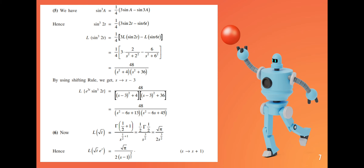Find the Laplace transform of sin³(2t). Using the identity sin³a = (3 sin a minus sin 3a) divided by 4, with a equal to 2t: sin³(2t) = (1/4)(3 sin 2t minus sin 6t). Therefore the Laplace transform equals 1/4 times [3 times 2/(s² plus 4) minus 6/(s² plus 36)], using L{sin at} = a/(s² plus a²).